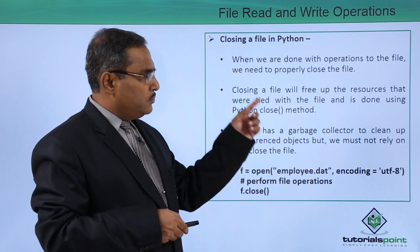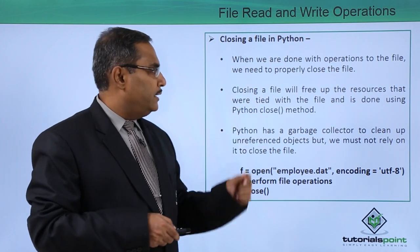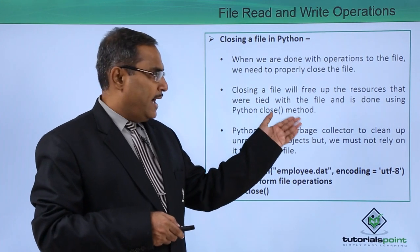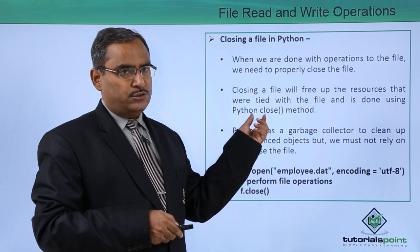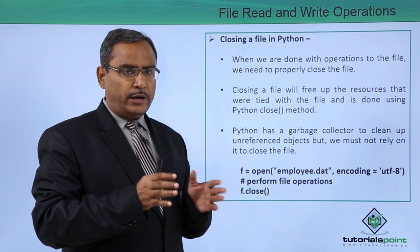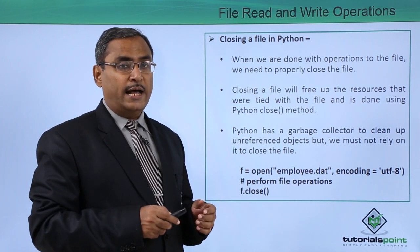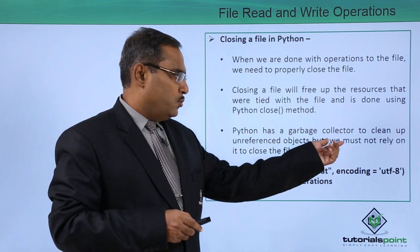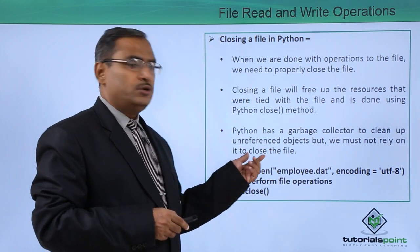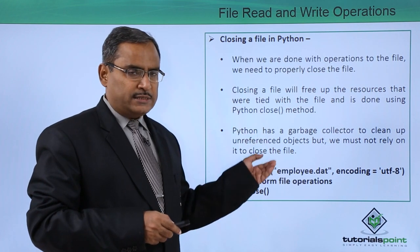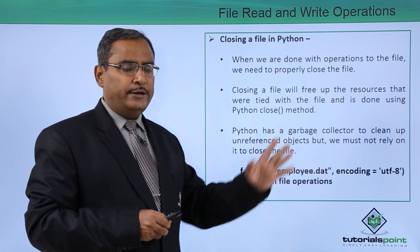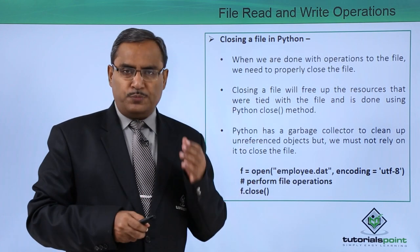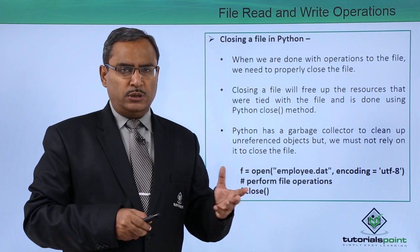Closing a file in Python. When we are done with operations on the file, we need to properly close it. Closing a file will free up the resources that were tied with the file, and this is done using Python's close() method. The allocated memory space will be declared as free space. Python has a garbage collector to clean up unreferenced objects, but we must not rely on it to close the file. It is good practice for programmers to open the file, do the operations, and then close it.